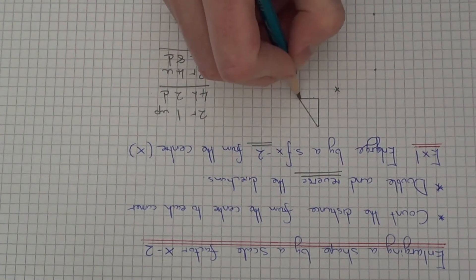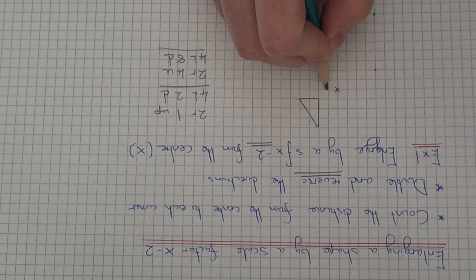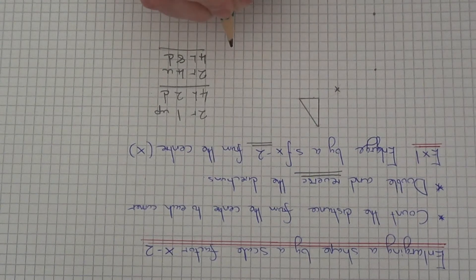So we've got one last corner to do, so this is the bottom right corner. So from the centre to the corner it is 4 squares right and 1 square up.